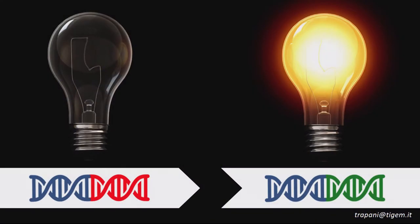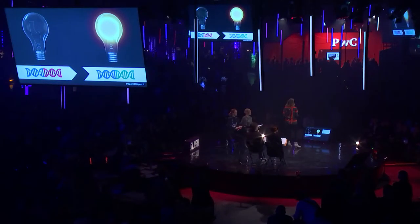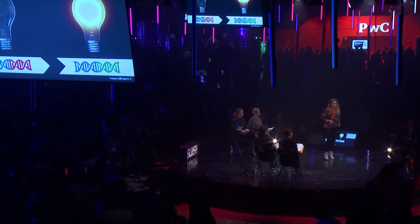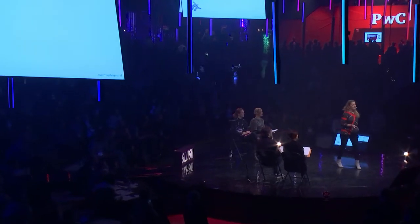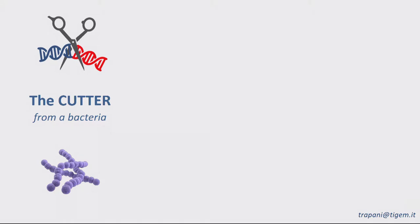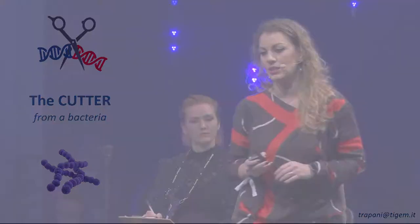I want to find a way to allow these patients to see, and my idea is to correct the mutated region of the gene inside the patient's cells so that vision can be turned on again. To do this, I will need just three tools. My first tool is a pair of scissors that I will take from bacteria and use inside the patient's cells to cut and remove the mutated region of the gene. To achieve my goal, I will need to introduce this tool inside the patient's cells.